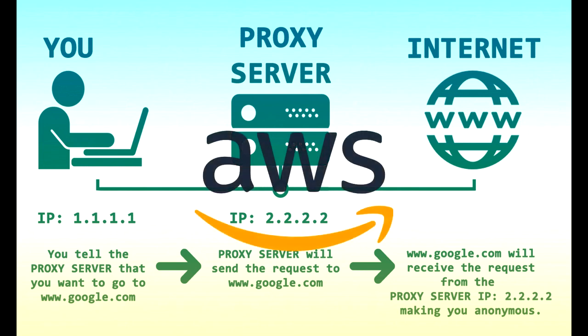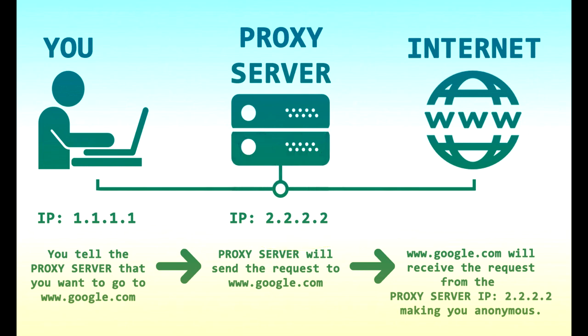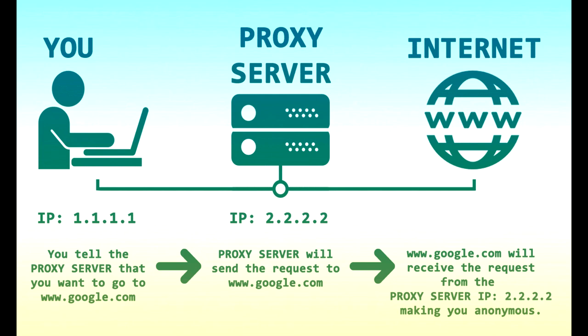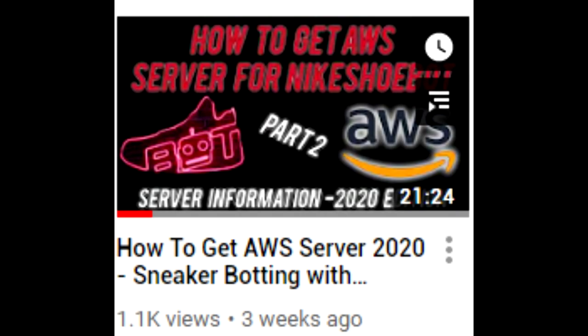Pros of using a server: servers are a lot faster and you're able to use data center proxies, which helps on releases that have Shopify websites since data center proxies are faster than residential proxies. Cons: using an AWS server can be expensive, especially if you're running the bot for restocks or all day. If you're a beginner, I recommend putting AIOBot on your local computer until you become more familiar and start seeing success, then move to a server. Check out my other video on how to set up an AWS server for best settings.